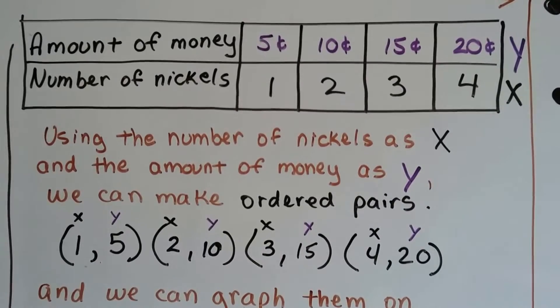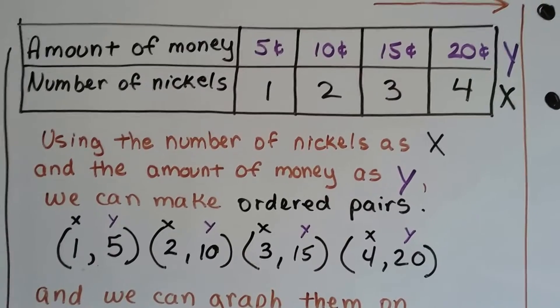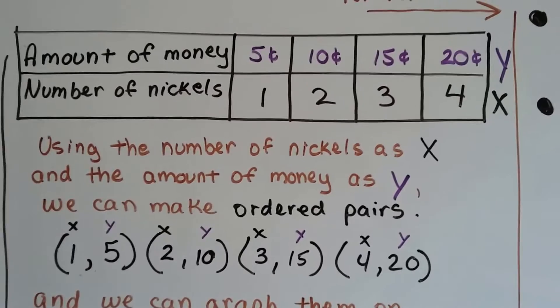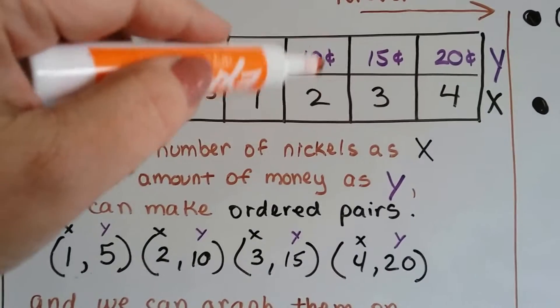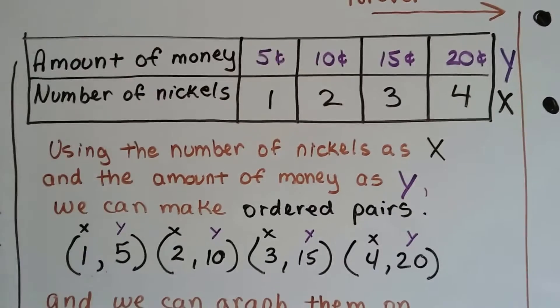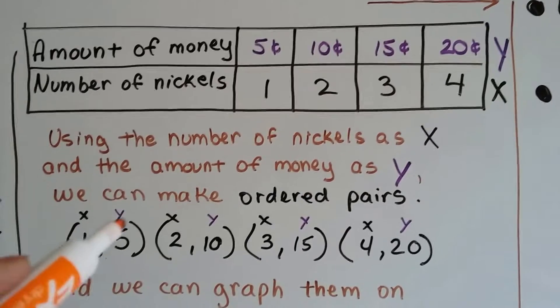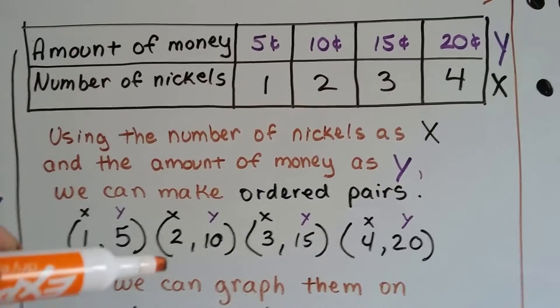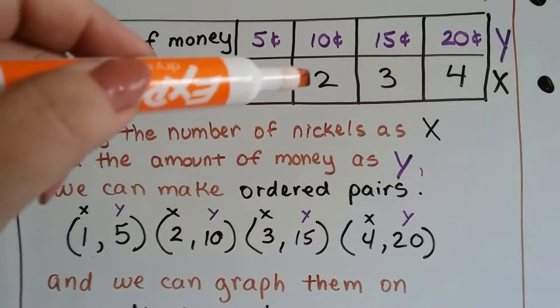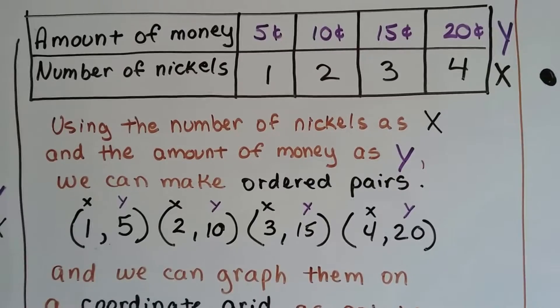And using the number of nickels as x and the amount of money as y, we can make ordered pairs. Here's an ordered pair, and here's an ordered pair. We have x is 1 and y is 5. x is 2, y is 10. We've got our ordered pairs.